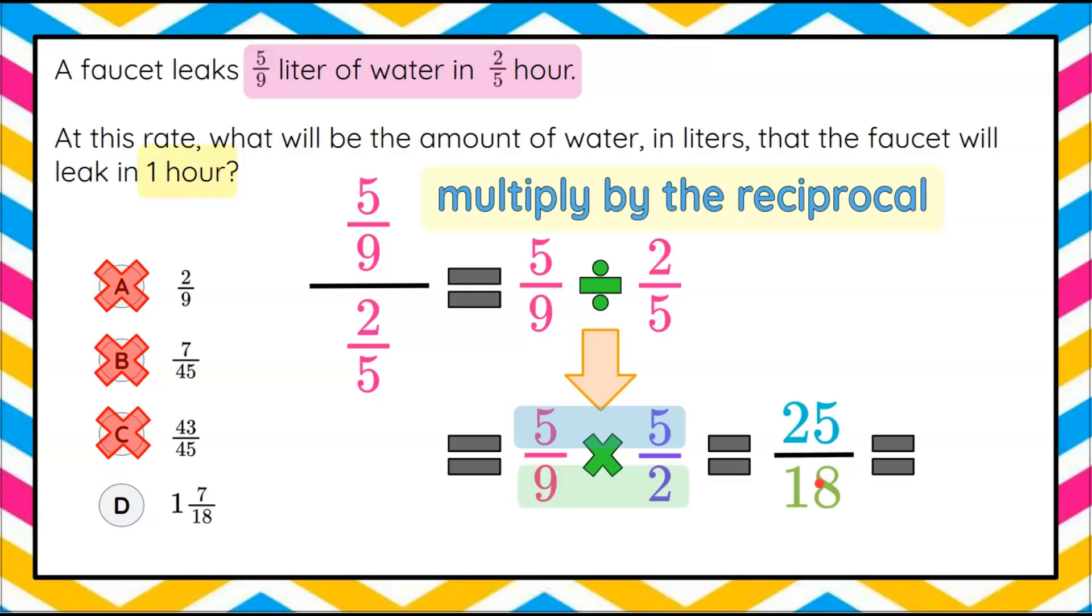So 18 goes into 25 once with seven left over. 25 subtract 18 is seven. So one and seven eighteenths liters in one hour gives us our unit rate. Answer choice D.